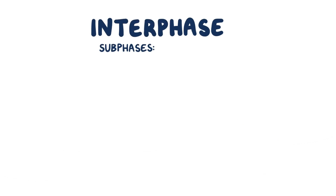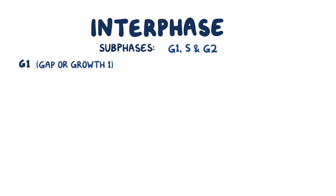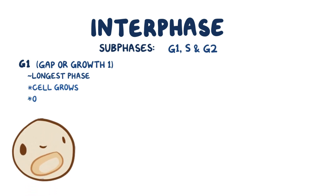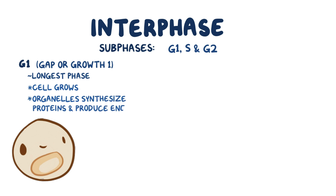Interphase can be broken down into three sub-phases: G1, S, and G2. G1 stands for gap or growth 1, and it's the longest phase of the cell cycle. During G1, the cell mostly grows, and the organelles take care of regular cellular business, like the synthesizing of proteins and producing energy.